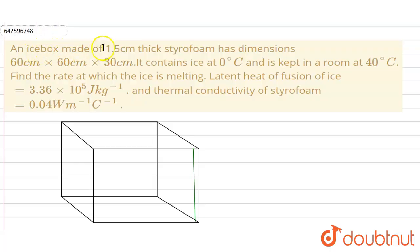An ice box of 1.5 centimeter thick styrofoam has dimensions 60 centimeter by 60 centimeter by 30 centimeter. It contains ice at 0°C and is kept in a room at 40°C. Find the rate at which the ice is melting. Latent heat of fusion of ice is 3.36 × 10⁵ joules per kilogram and the thermal conductivity of the styrofoam is 0.04 watt per meter degree Celsius.